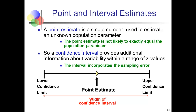We know that a point estimate is not likely to be exactly the population parameter—that's what we talked about in Chapter 7.1 when we discussed sampling error. A confidence interval, on the other hand, provides us with a range of values, helping us understand an approximate value for the population and how much variability there is in the sample of data.